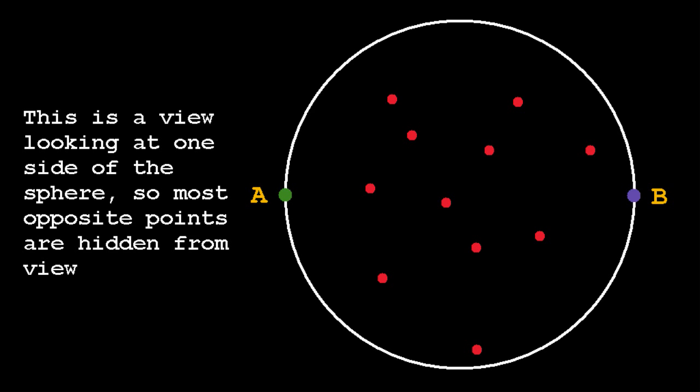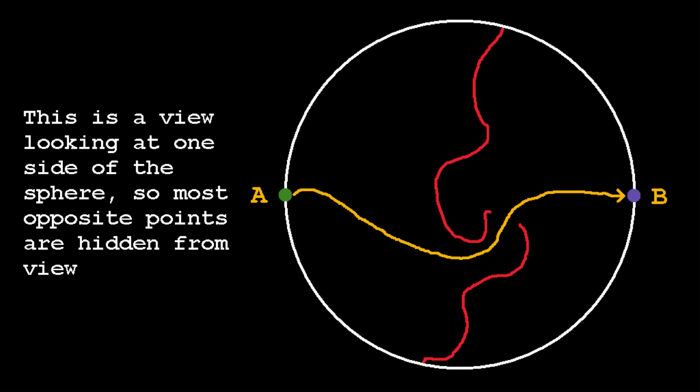As long as these points are disconnected, we can always find a path from A to B which does not contain any of these points. But as has been shown, it must contain a pair of these opposite points.